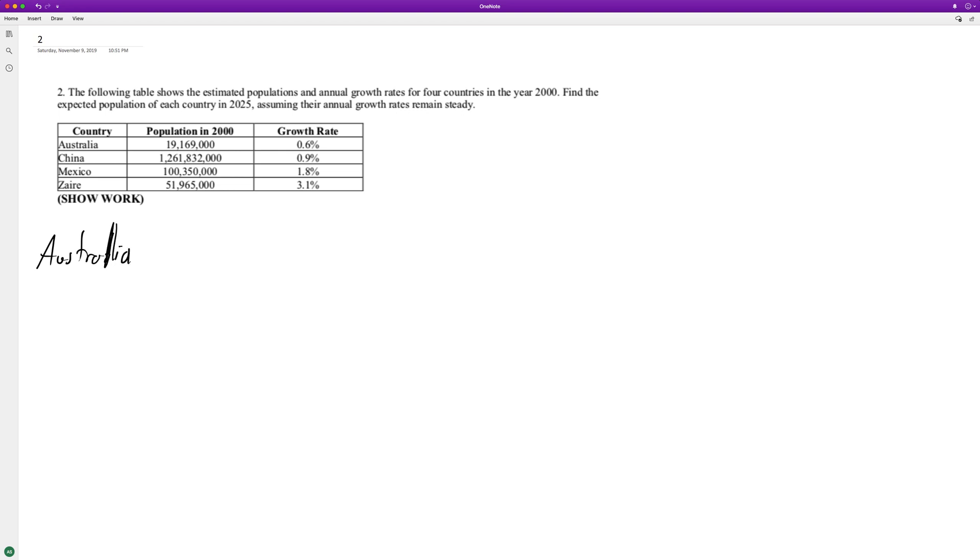What we'll do here, P of 25, going from 2000 to 2025, it's going to be 19 million 169,000, and then we're going to have 1 plus 0.006